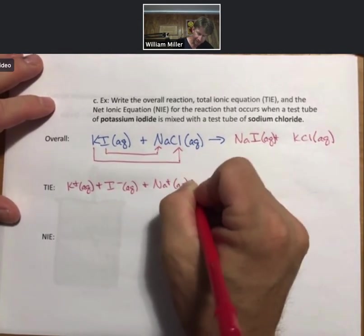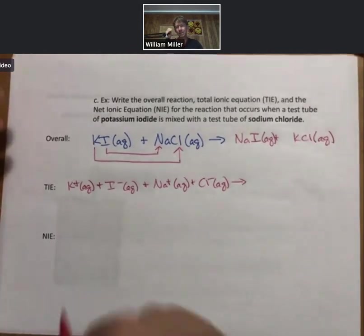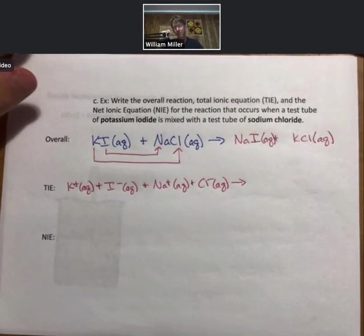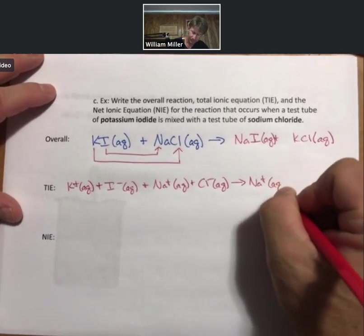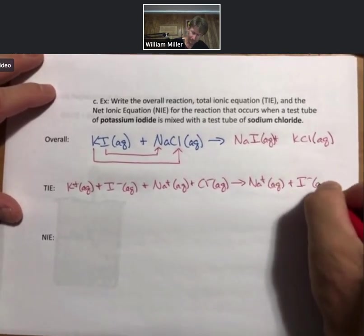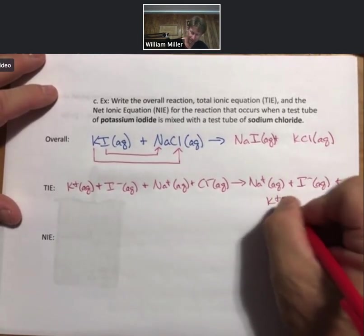Same thing for sodium chloride. Then we get to the product side. Sodium iodide, also strong electrolyte. Potassium chloride, also strong electrolyte.